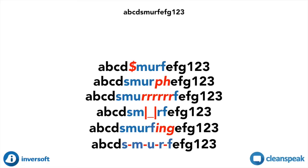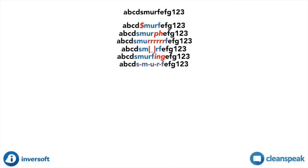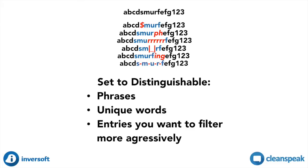All of these will be filtered when Smurf is set to Distinguishable. Set entries to be Distinguishable when there are phrases, when the entry is unique, or when you simply want to filter more aggressively and remove some of the false positive checks that CleanSpeak provides. The latter is common with children's applications where erring on the side of filtering too much content is actually preferred.